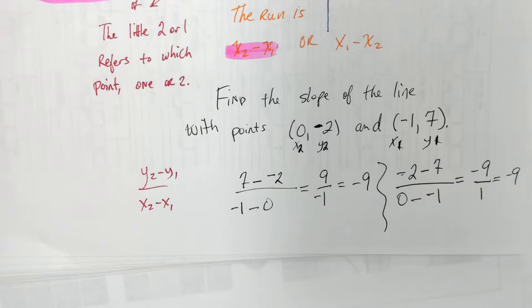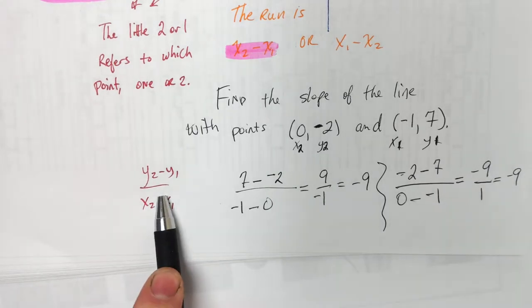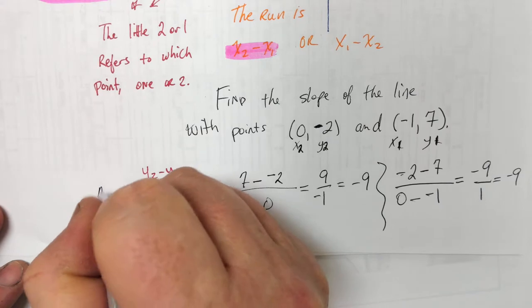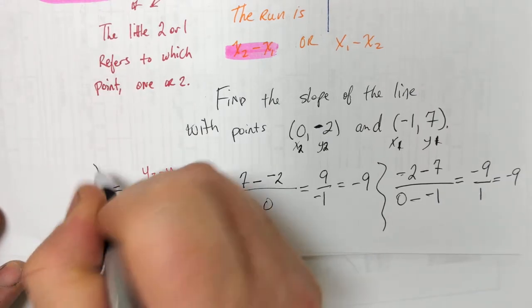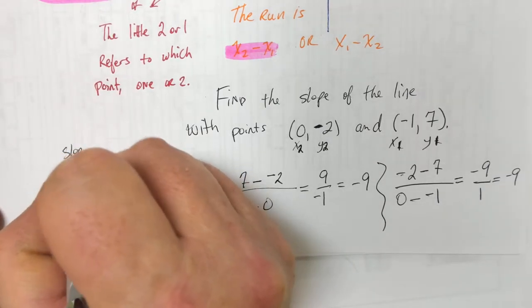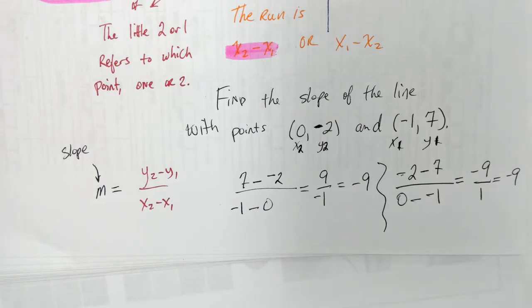That formula — y2 minus y1 over x2 minus x1 — that's the slope formula we're always going to use. M stands for slope. Long story, but it does.